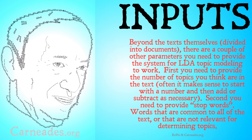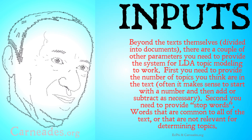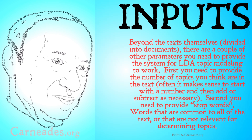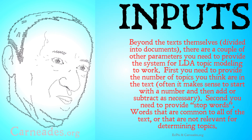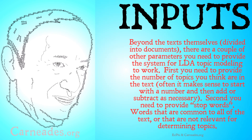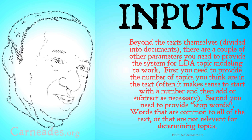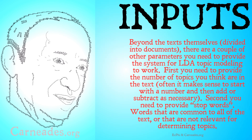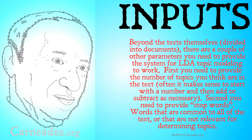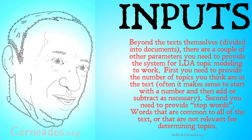Beyond the texts themselves, which are divided into documents, there are a couple of other parameters you need to provide for LDA topic modeling to work. You can divide your texts in different ways — these might be very short documents like tweets, or very long ones like a full philosophy paper or book as each individual document. First, you need to provide the number of topics you think are in the text. The LDA system doesn't know how many topics there are; it needs you to tell it. Often it makes sense to start with a number and then add or subtract as necessary. If some topics seem to capture two different concepts, you may need more; if topics seem to capture the same thing, you may need fewer.